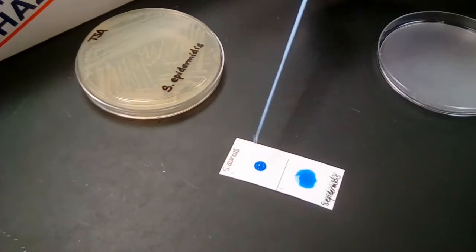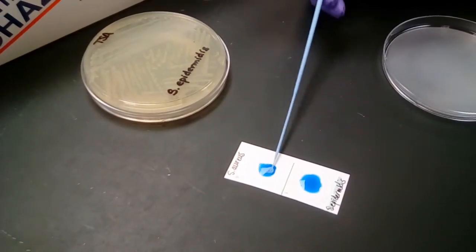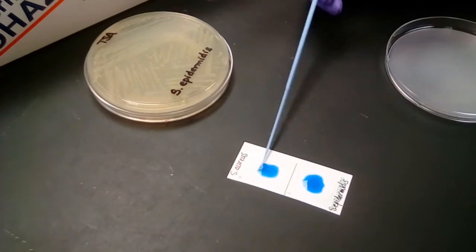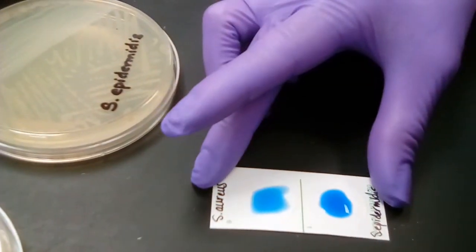But when we use cells that are Staphylococcus aureus, you'll see what begins to happen. As you can already see, it's beginning to agglutinate a little bit.